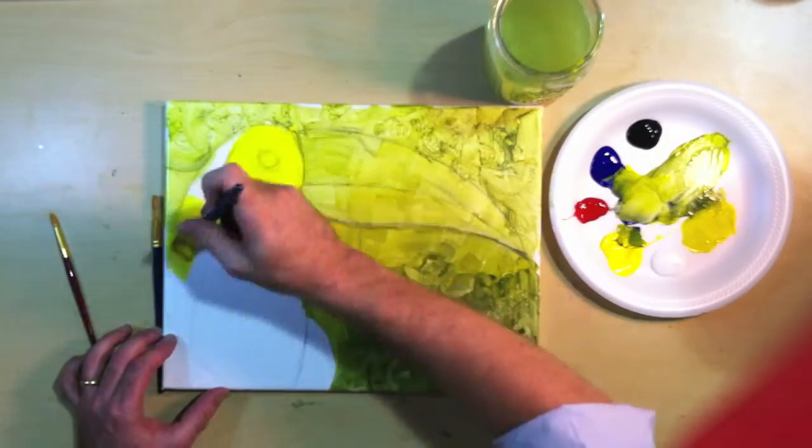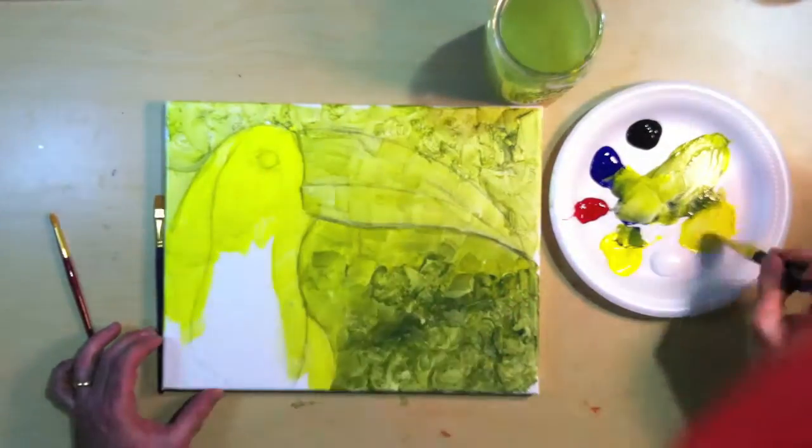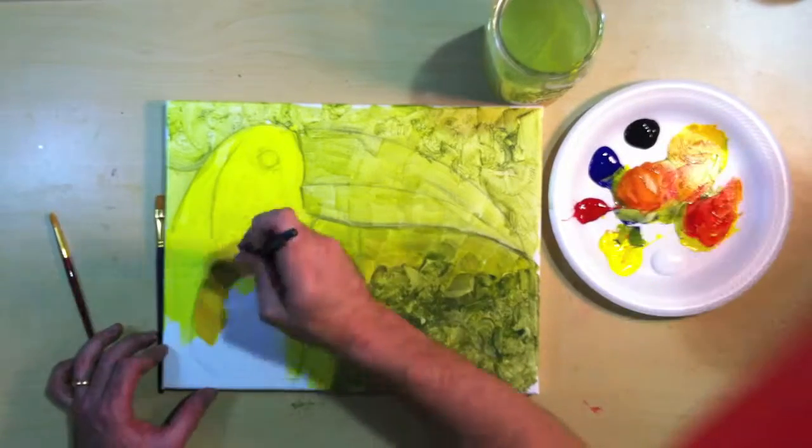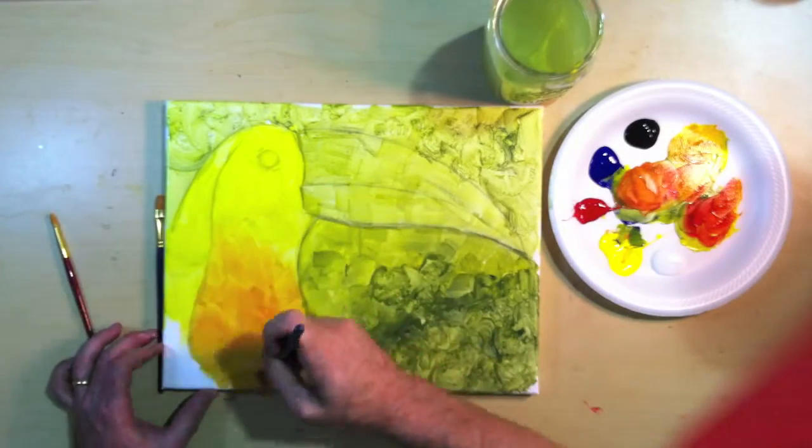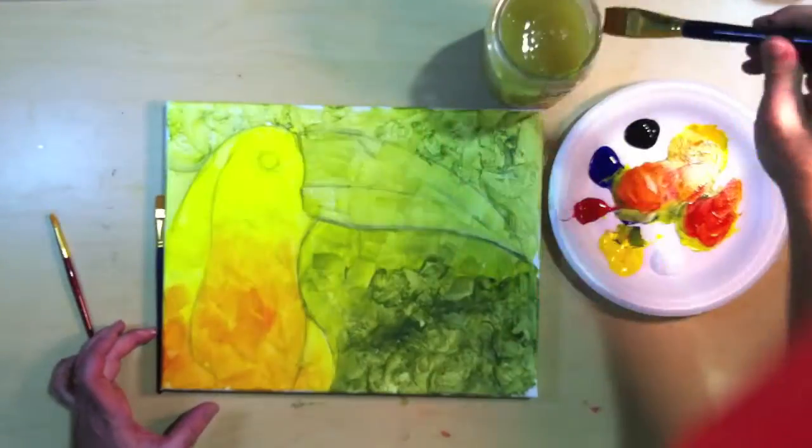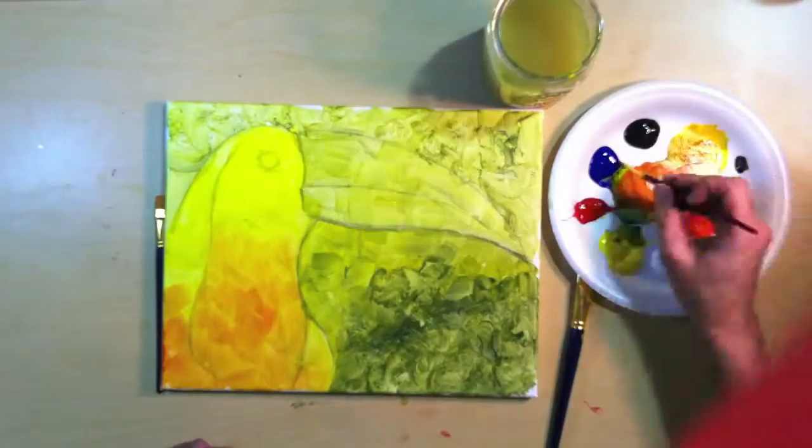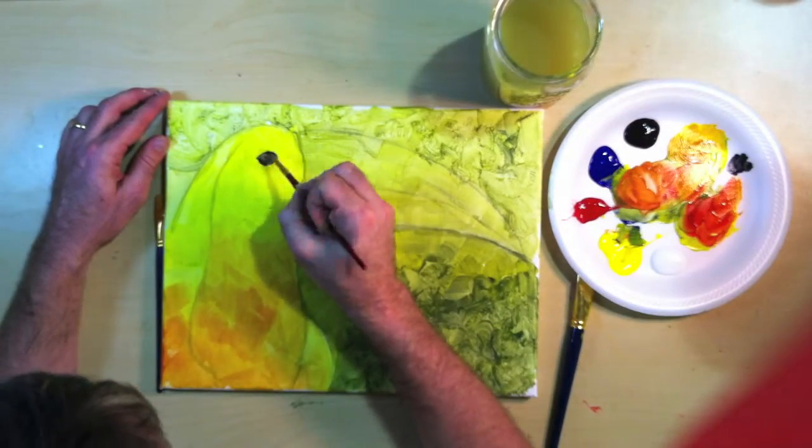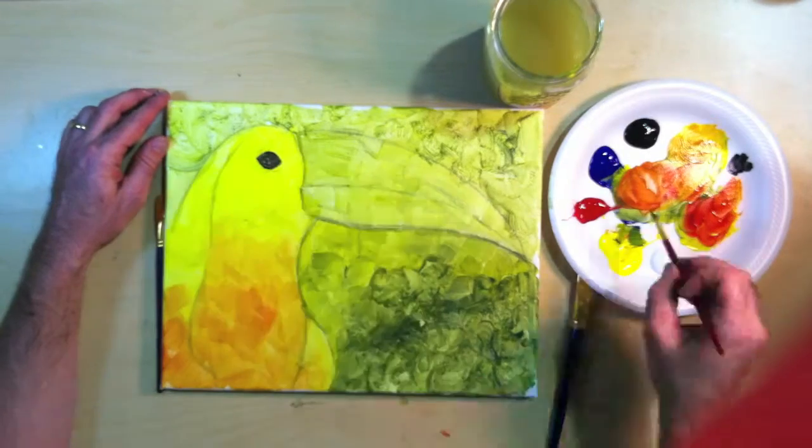You'll also notice that I'm just laying a quick background on. I'm covering the toucan all in yellow. The beak and the underneath the background is going to be green. As I go down the toucan I've made them a little bit more orange, so my yellow and my red.